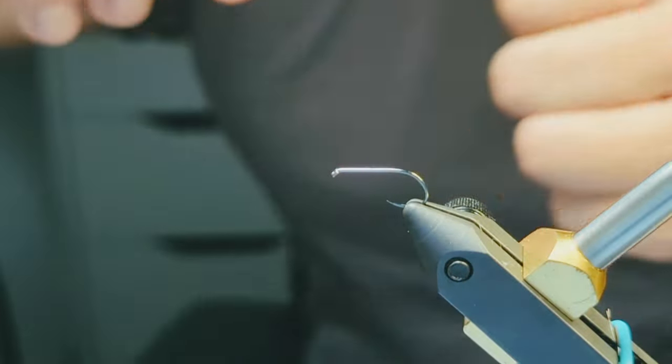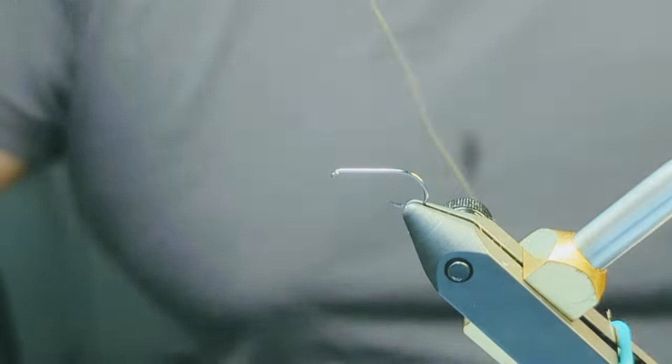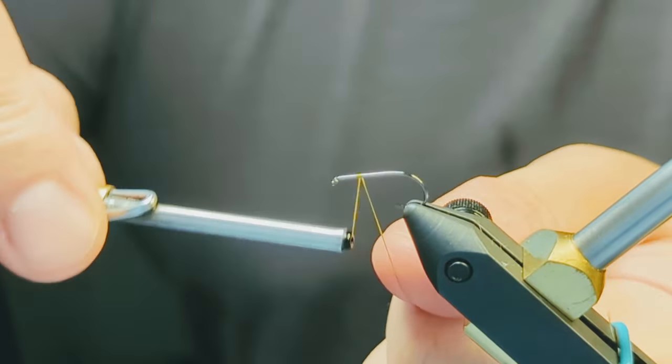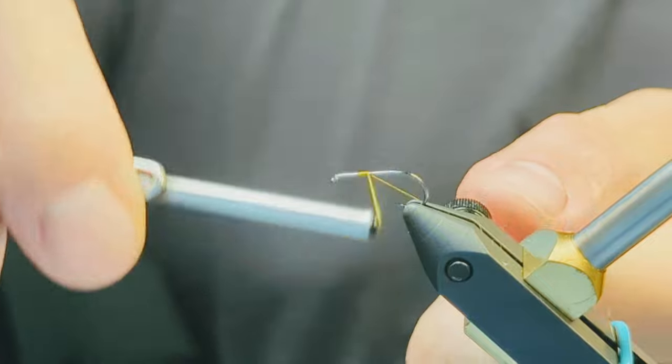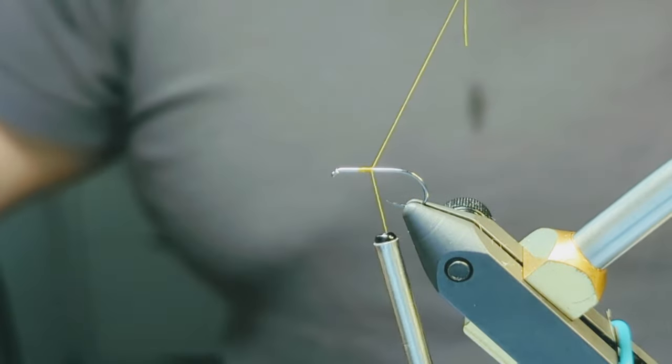Today I'm tying a variation on a really classic wet fly pattern called the partridge and green. It doesn't require a lot of materials and we'll finish it in under five minutes.